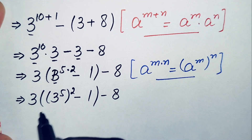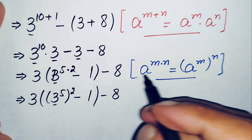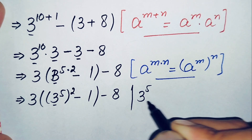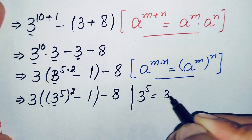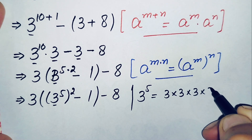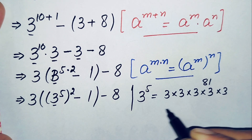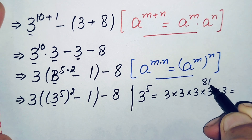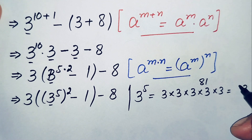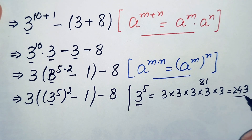Now we will find the value of 3^5. This means we multiply the base 3 five times: 3×3=9, 9×3=27, 27×3=81, 81×3=243. So the value of 3^5 is 243.